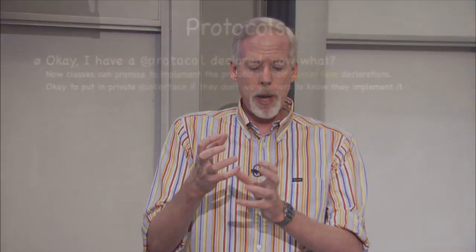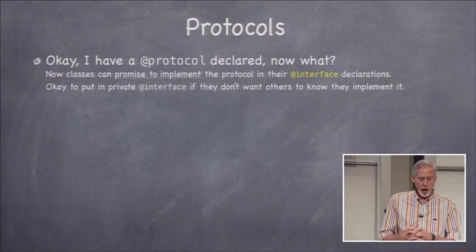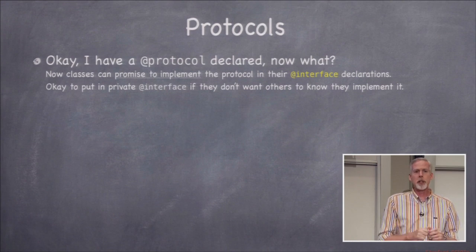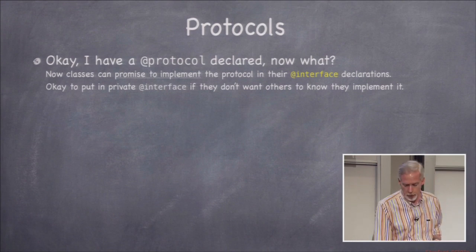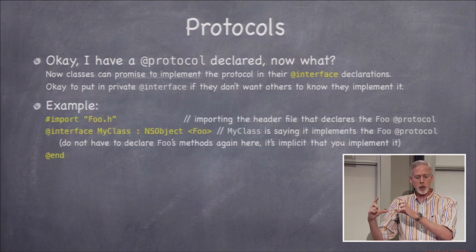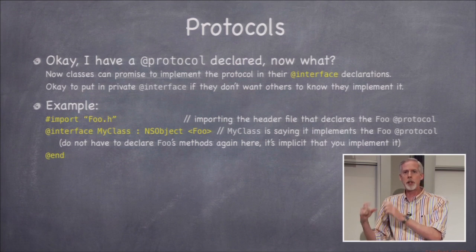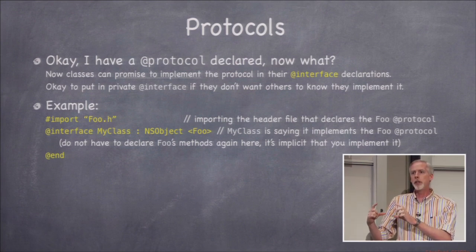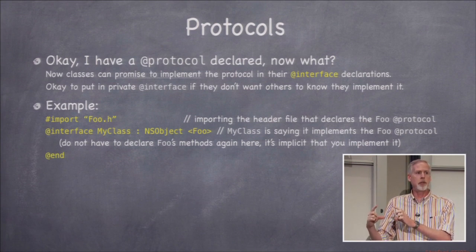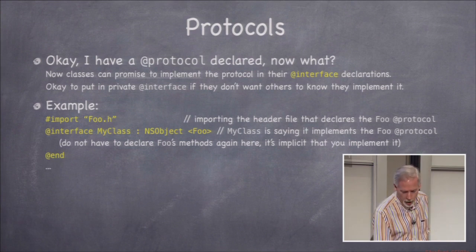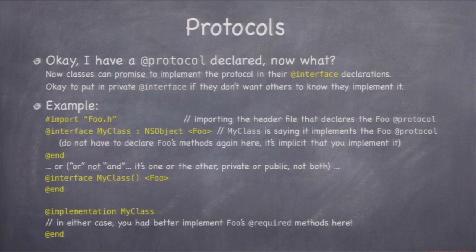Once a protocol is declared, some class has to promise to implement it. You do that by putting angle brackets with the protocol name on your @interface line. So in the public @interface, after the superclass you put angle bracket Foo, and that means your class is promising to the compiler and readers of this code that it will implement all the required methods in Foo. You can also make this promise privately in the @interface extension inside your implementation file.